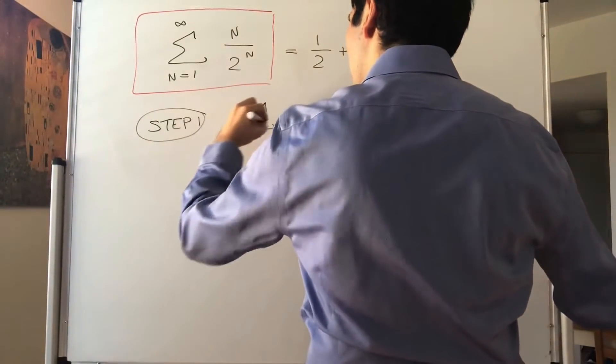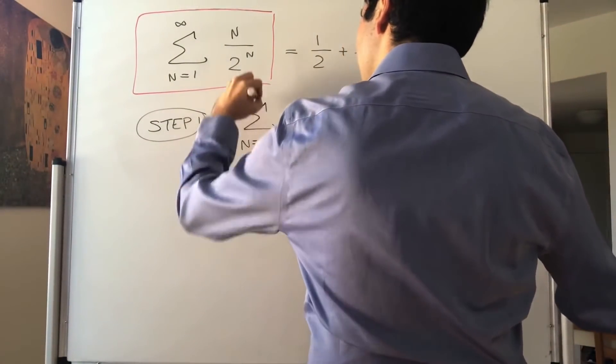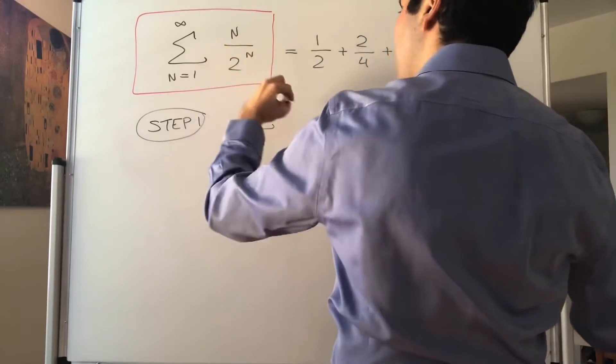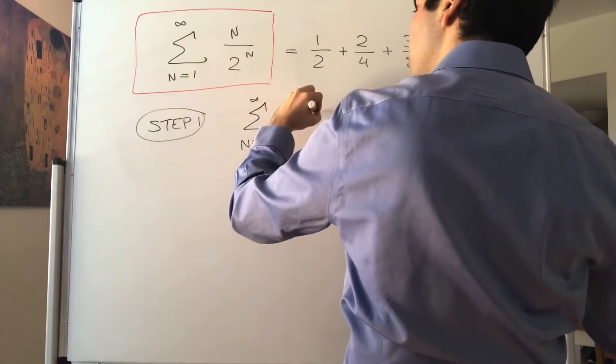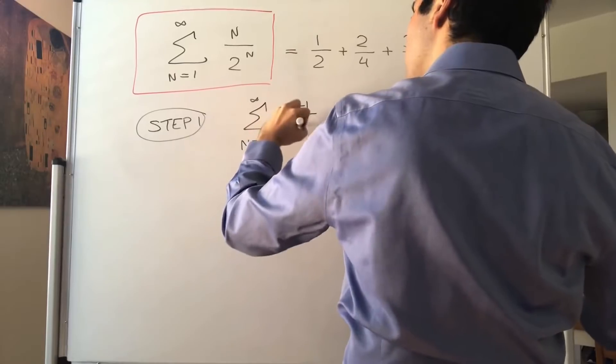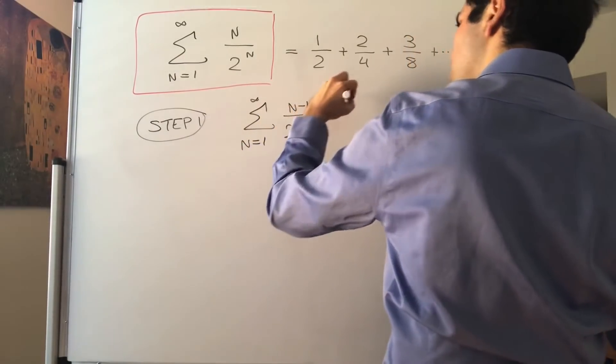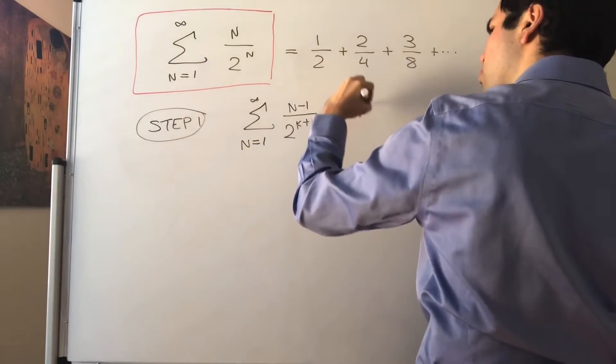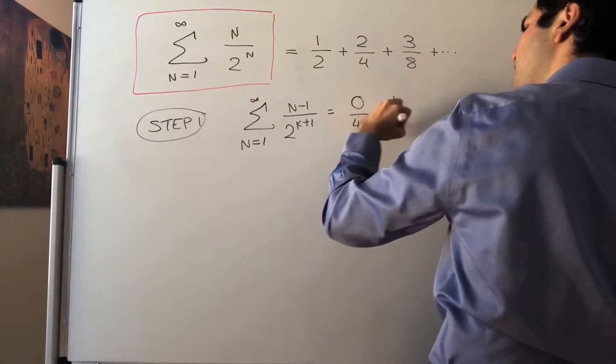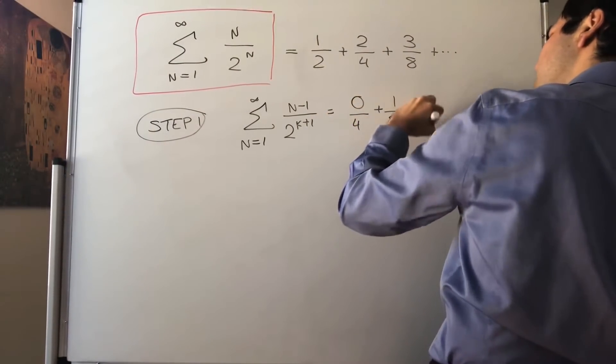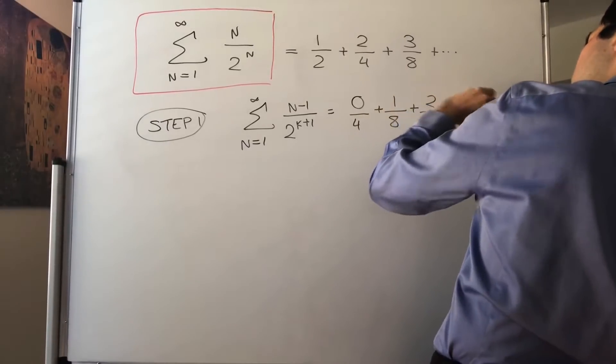So let's calculate the sum from 1 to infinity of, you do 1 less in the numerator, but you do 1 more in the denominator. So that becomes, I think, 0 over 4 plus 1 over 8 plus 2 over 16 plus 3 over 32.